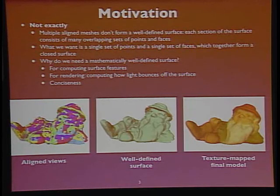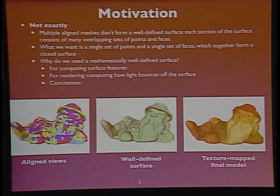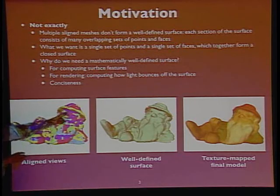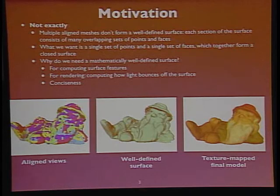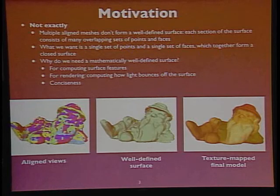There are a couple of reasons we need this. If we want to compute surface features, we take individual points and calculate features with respect to that point — an egocentric view where you look around at nearby points and describe their distribution. If we have five identical versions of the same point, we calculate five identical feature sets, each corresponding to the same location on the surface. Furthermore, each feature vector will include multiple identical points, which is confusing.